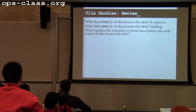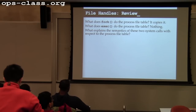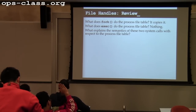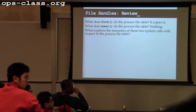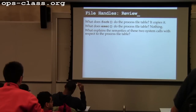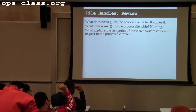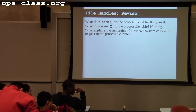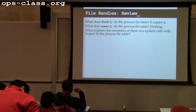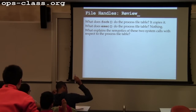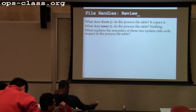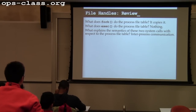Why do we have these canonical semantics with respect to the file system calls? What is this designed to enable? It's to enable inter-process communication. The fork and exec semantics with respect to the file table give the parent and child some way to communicate — that's what these canonical semantics are set up to allow.